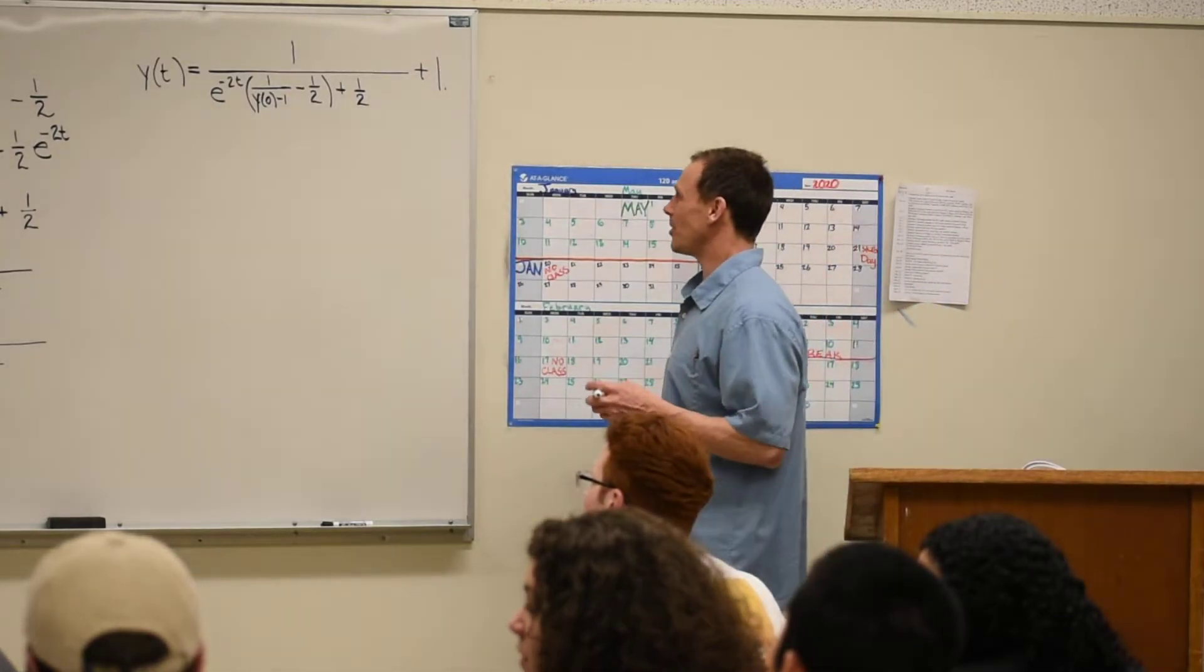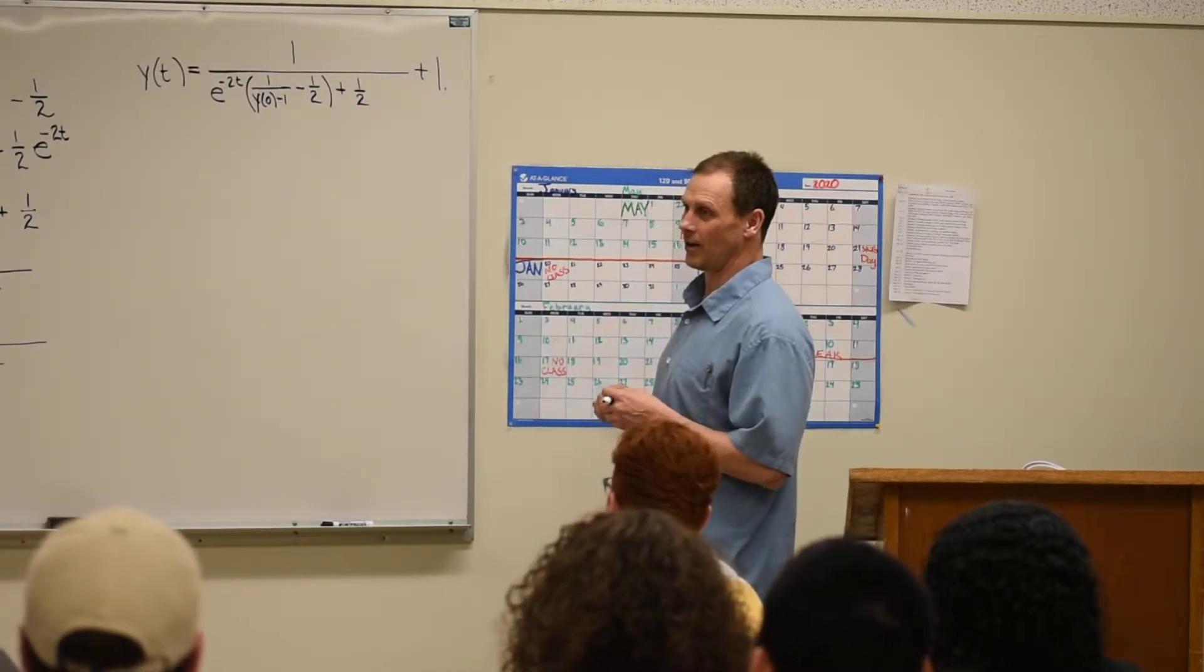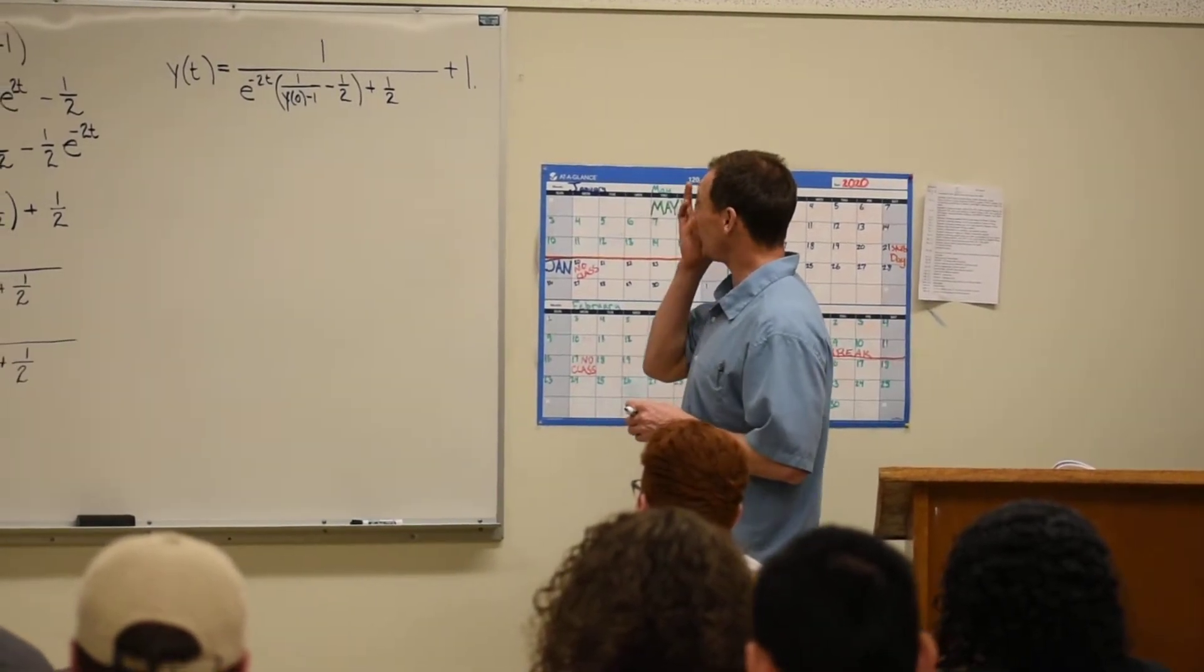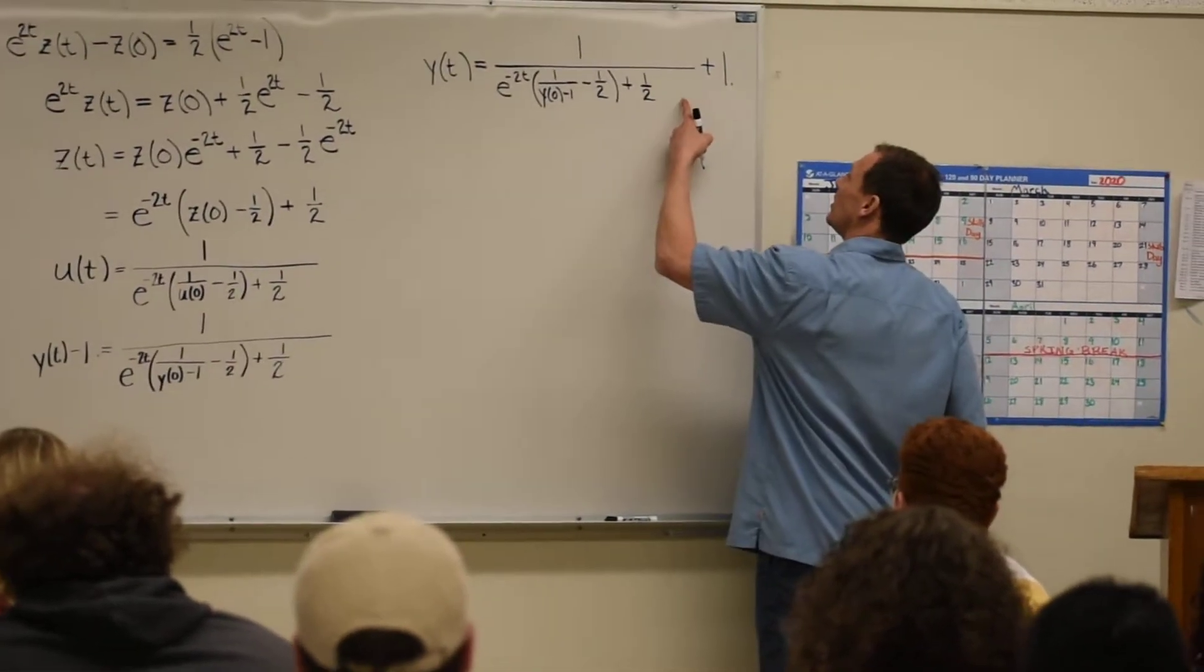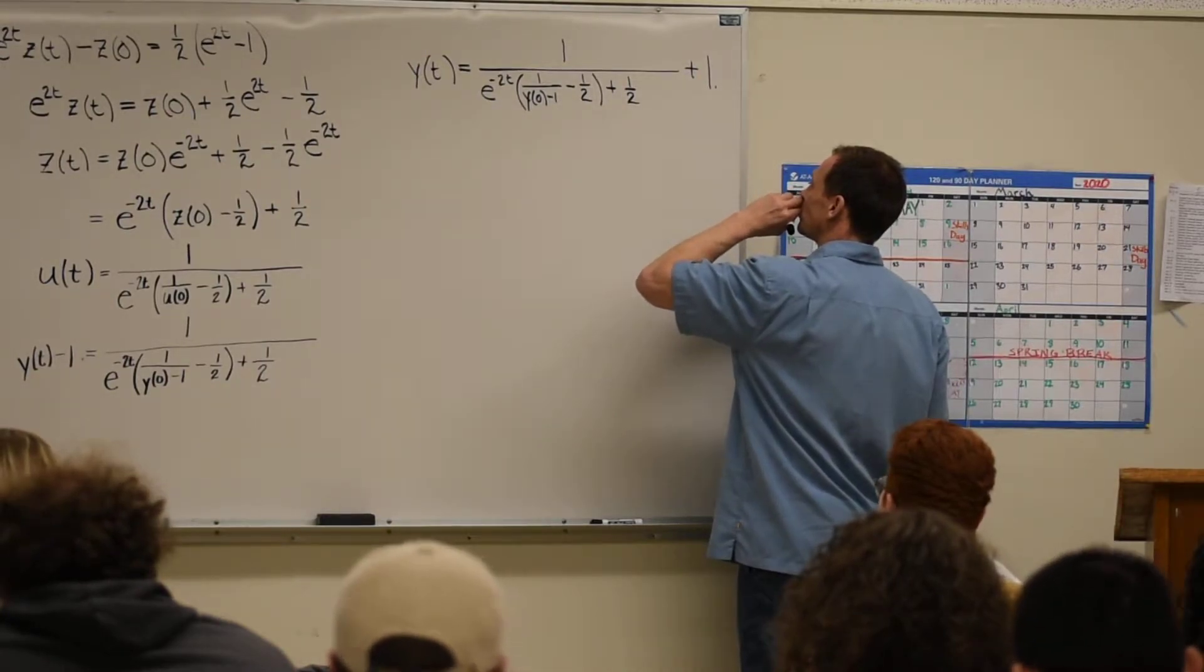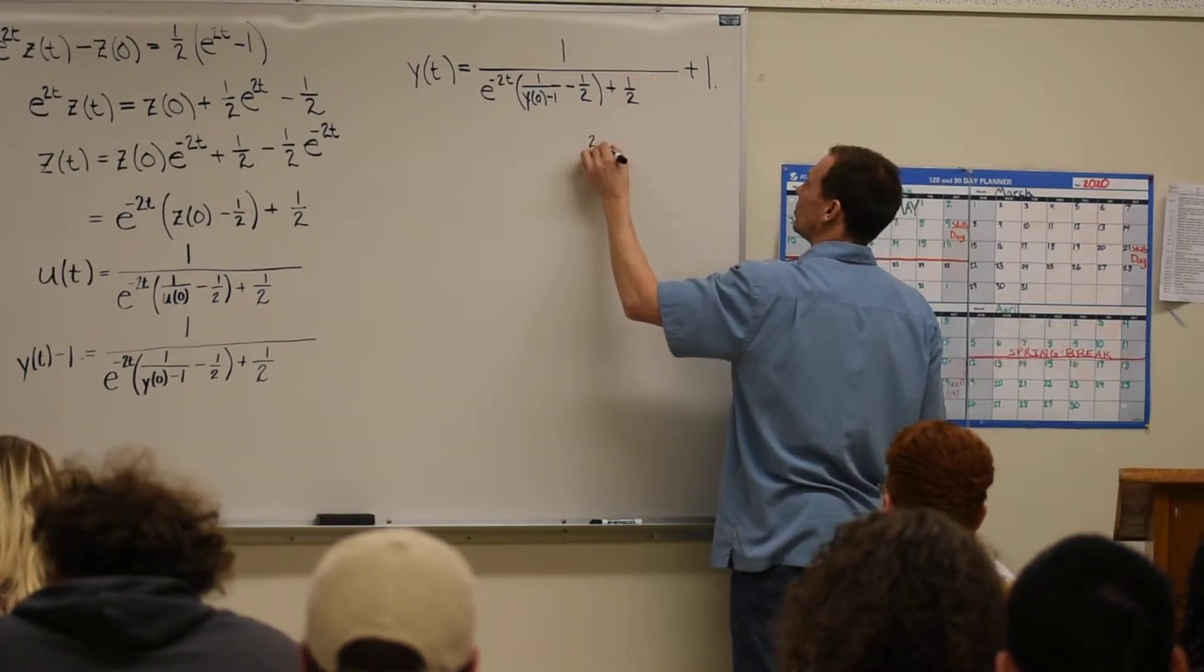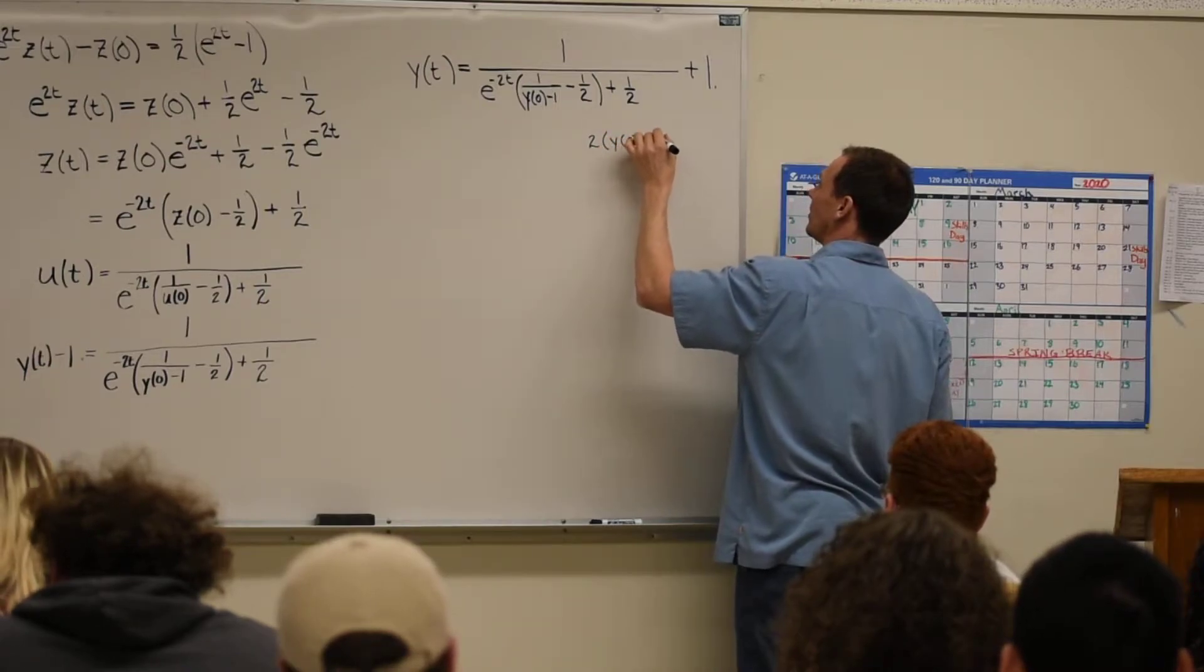I think Marceline might be right. Let's try it. You could draft this if you knew what Y of zero was. But I think if we clean it up a little bit, it might be easier to see what it is. Like, if we just take this fraction,